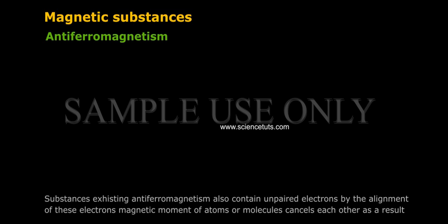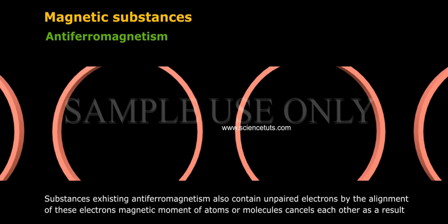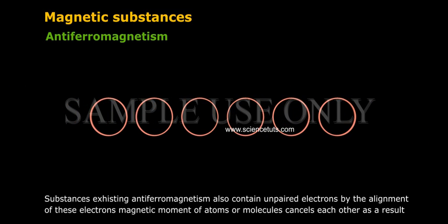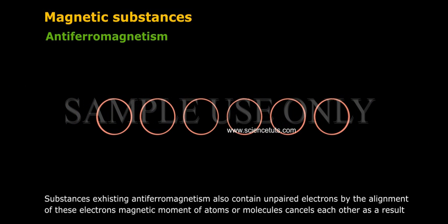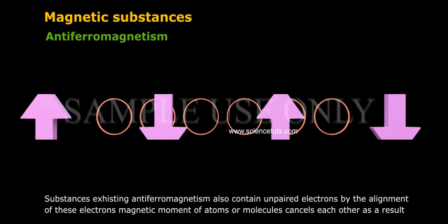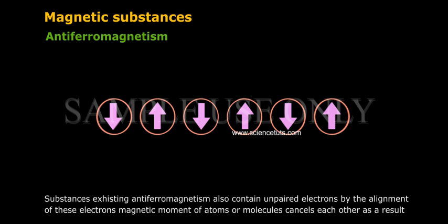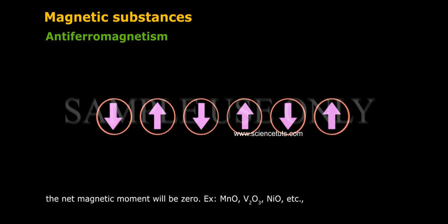Antiferromagnetism: Substances exhibiting antiferromagnetism also contain unpaired electrons, but the alignment of these electrons' magnetic moment of atoms and molecules cancels each other. As a result the net magnetic moment will be zero. Examples: MnO, V2O3, NiO, etc.